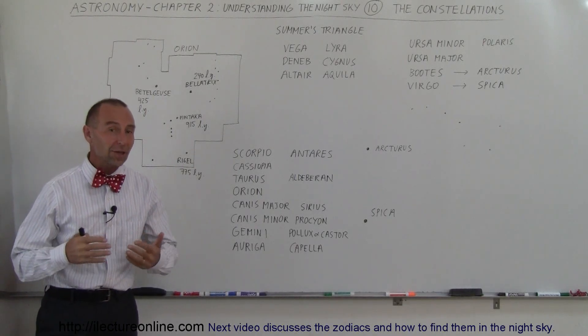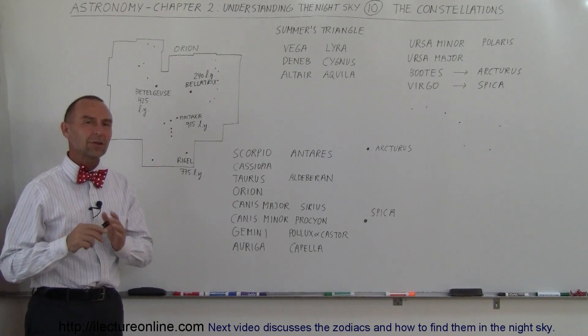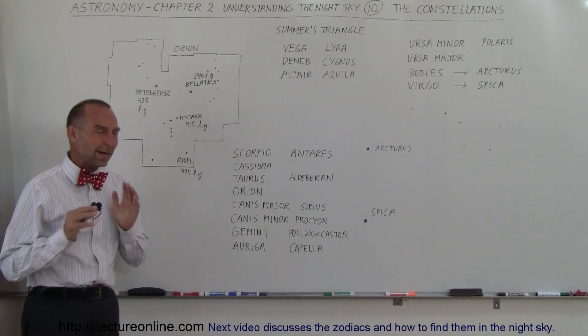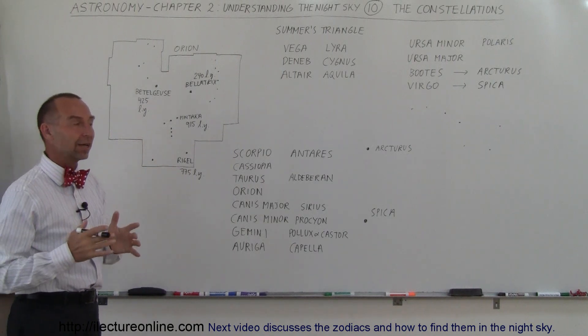Welcome to Electron Align and continuing on with understanding the night sky, let's now talk about constellations. There are 88 constellations that map out the entire night sky.